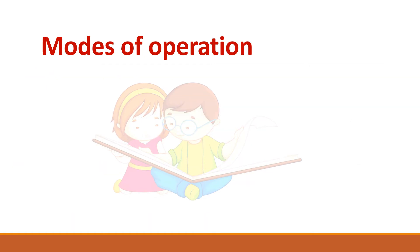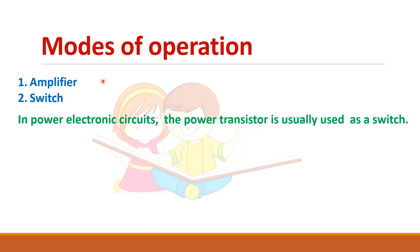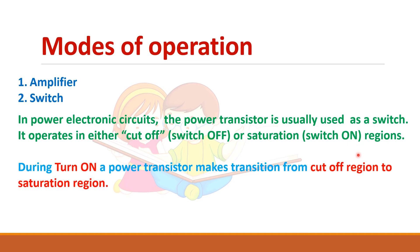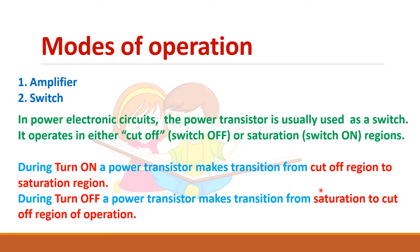The transistor has two modes of operation: it can be used as an amplifier or a switch. Operating in the active region makes it act as an amplifier, while operating in cutoff or saturation mode makes it act as a switch. Switching operation is preferred in power electronic circuits because power loss is less — in the off state current is low, and in the on state voltage drop is low.